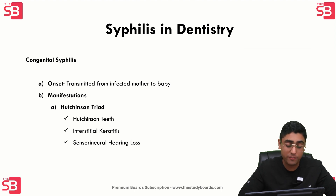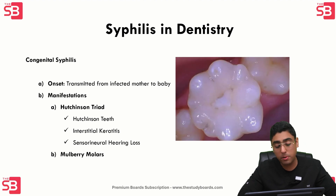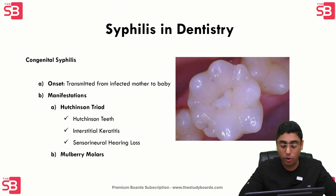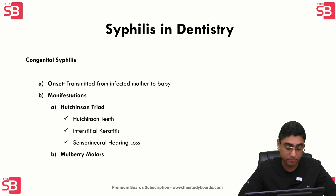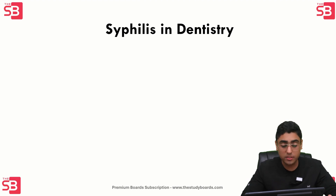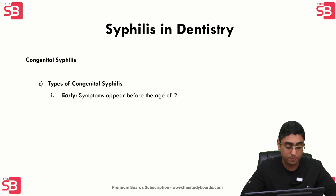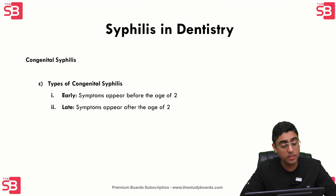The next manifestation is mulberry molars — multiple rounded, rudimentary enamel cusps on the permanent first molars, also known as Moon's molars or Fournier's molars. Congenital syphilis is further divided into two types: early congenital syphilis, where symptoms appear before the age of two, and late congenital syphilis, where symptoms appear after the age of two.